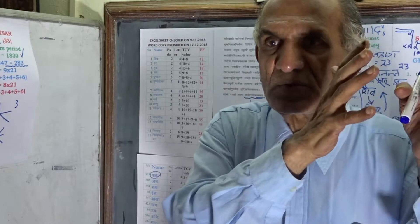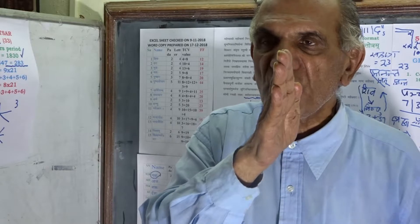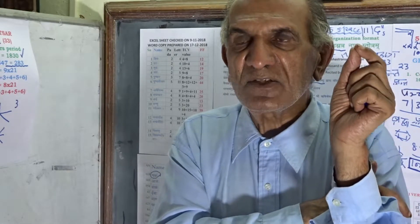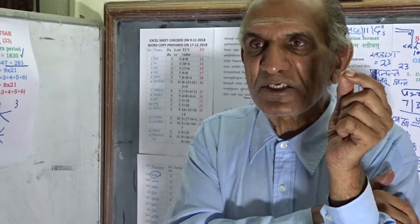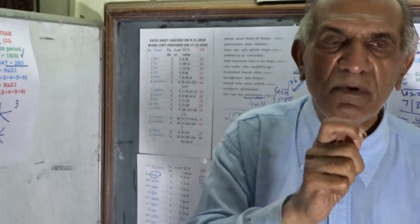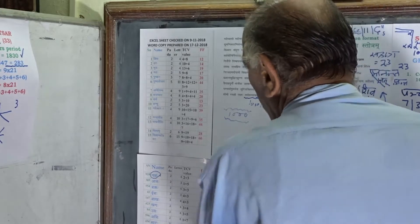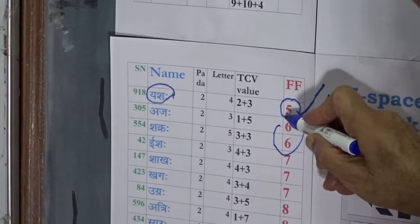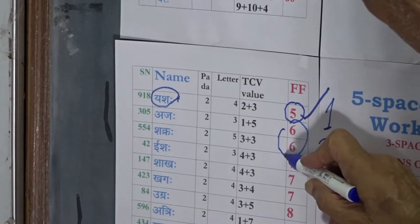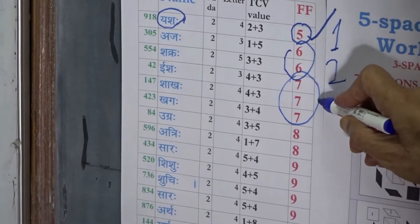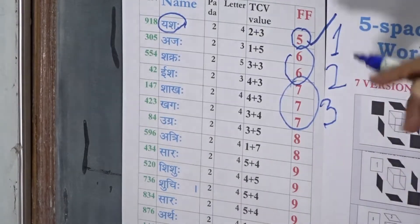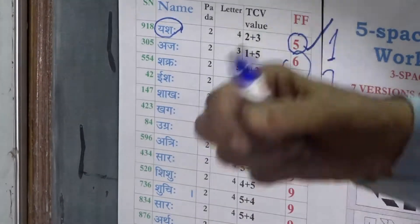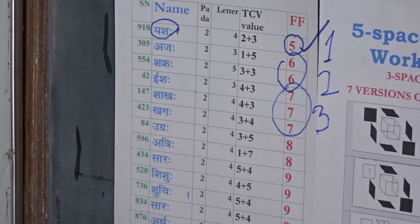The minimum TCV value 5 is of frequency 1. Then the next TCV value 6 is of frequency 2, and the third TCV value 7 is of frequency 3. One may pause here and take note that these frequencies are leading to another sequential organization feature of 5-space VMST.